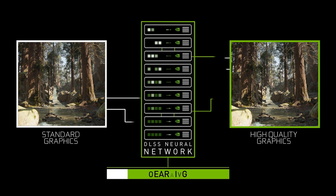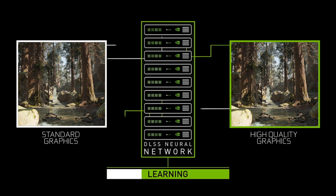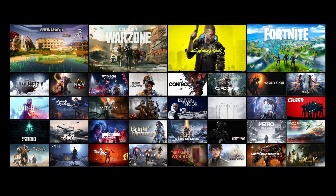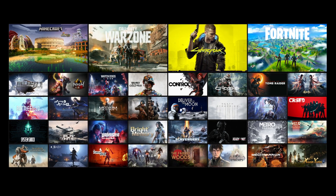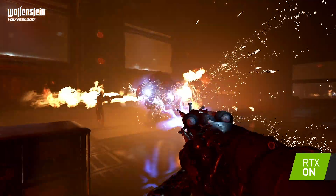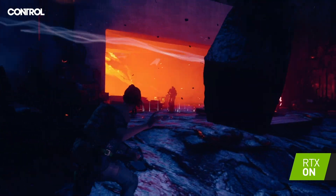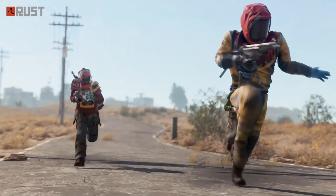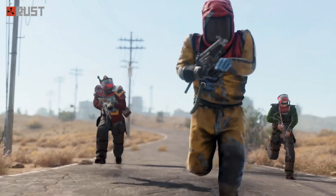For every frame of the video game you play, DLSS is running a neural network to reconstruct all of the detail and all of the beauty of the game but at a much faster frame rate. DLSS is now in over a hundred games and applications and adoption keeps accelerating. We've released integrations for the major engines like Unity and Unreal, which makes it very easy for developers to integrate.